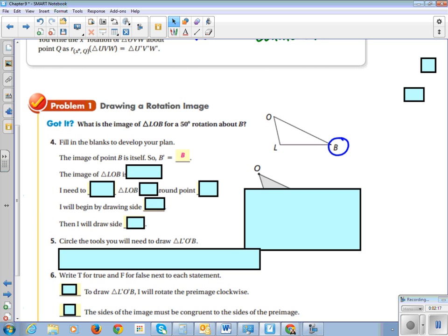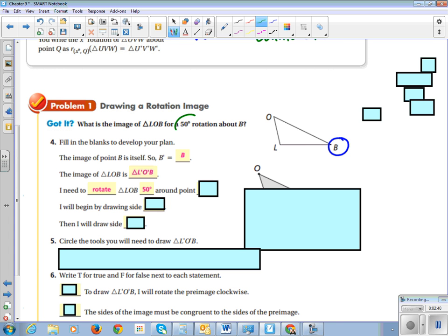So B and B prime are going to be equal to each other. The image of triangle LOB is triangle L prime, O prime, and B stays the same because it's itself, so B doesn't have a prime on it.